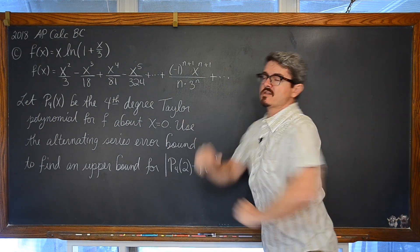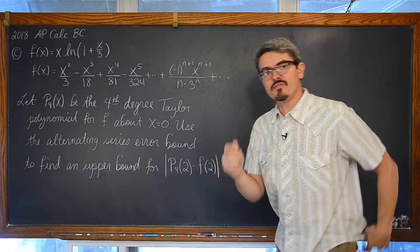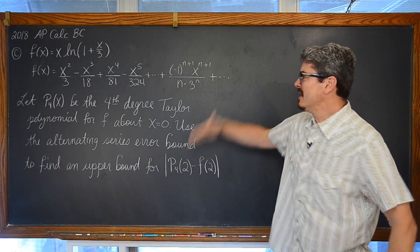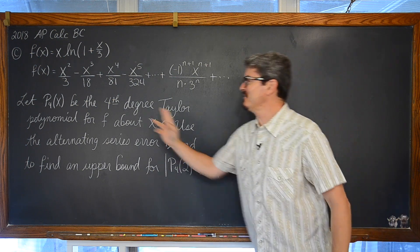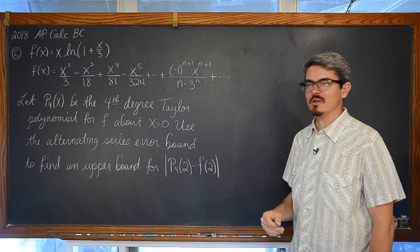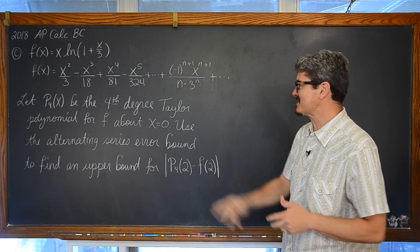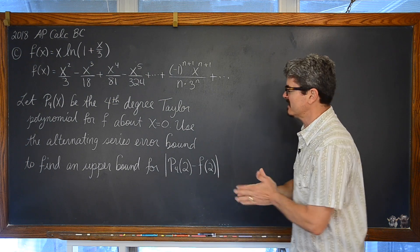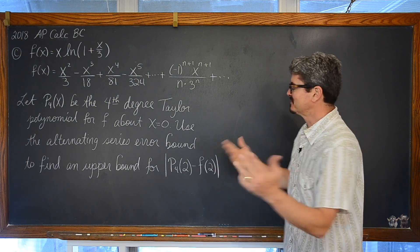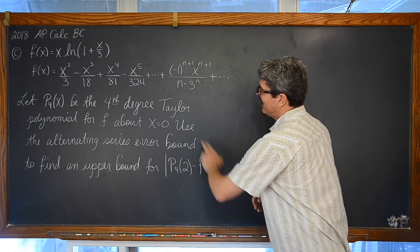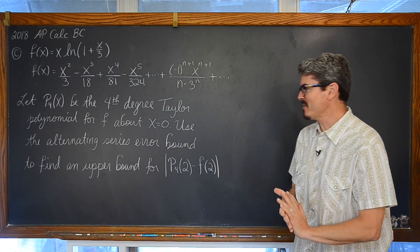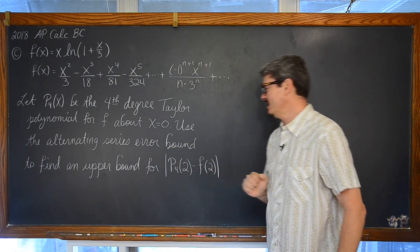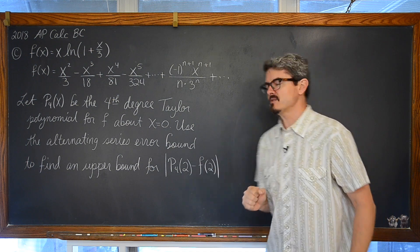This is part C of the last question of the 2018 Calculus BC exam — we are almost done. Let P be the fourth degree Taylor polynomial for f about x equals zero. Use the alternating series error bound to find the upper bound for the absolute value of P₄(2) minus f(2).